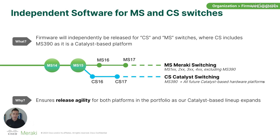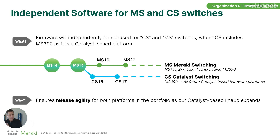So you'll now have the MS version and the CS version. Overall, it's not a big change when it comes to doing a firmware upgrade. If you have a network with an MS250 and an MS390, you'll simply select the respective firmware version for each of those models. This increases firmware velocity and allows our teams to be more focused on the deployment of features, functions, and bug fixes on those specific platforms.